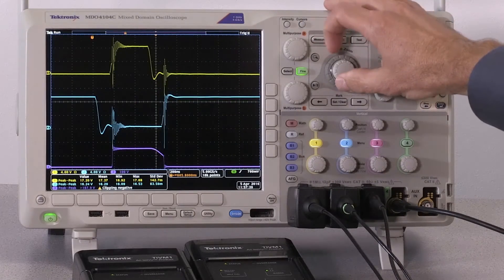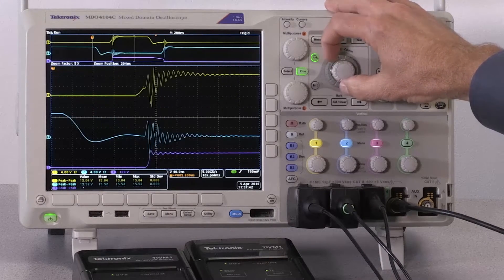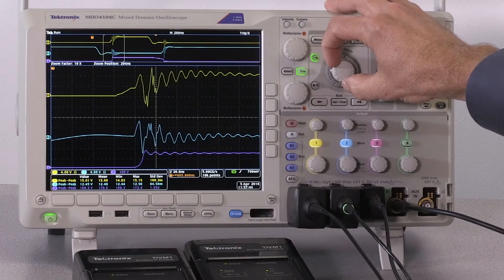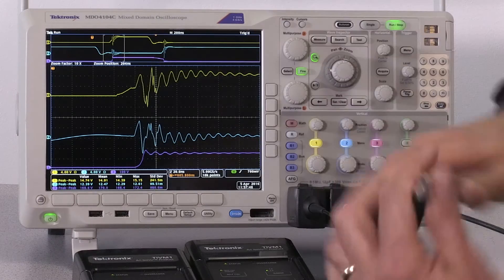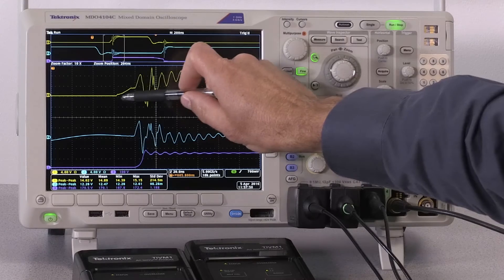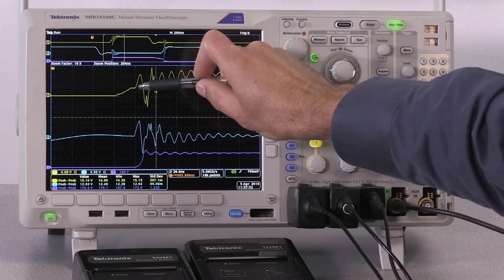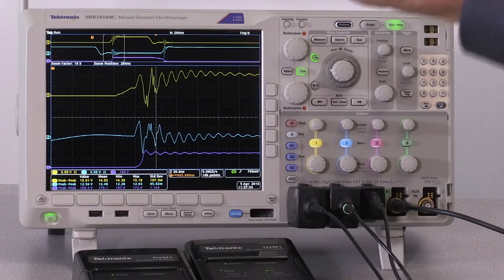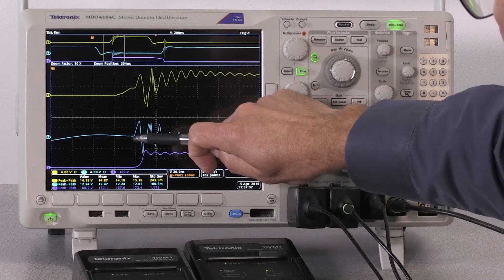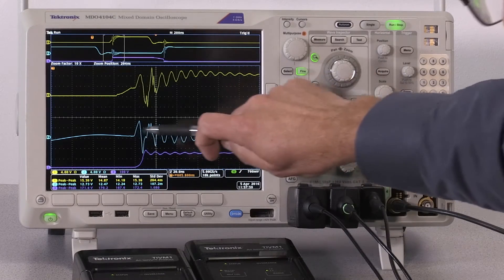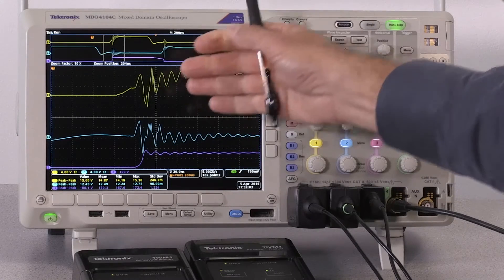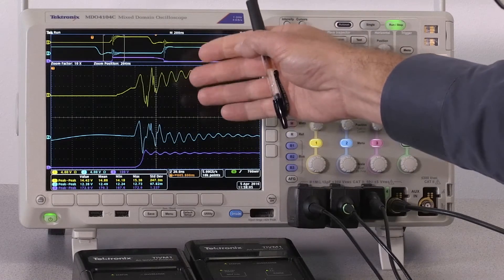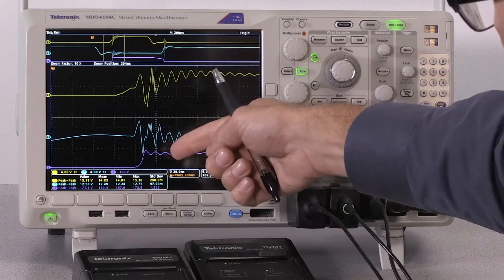Now we can zoom in on the high-side turn-on, and you can see the charging characteristics of the high-side gate node. You can see the low-side gate node has got some ringing due to parasitic coupling between the low-side gate, the low-side FET, and the switch node.